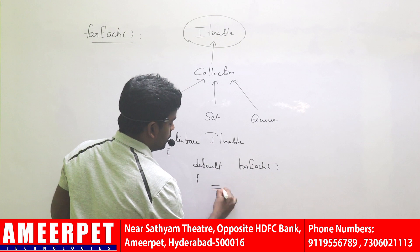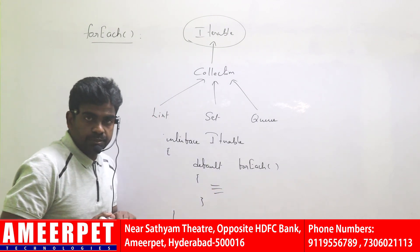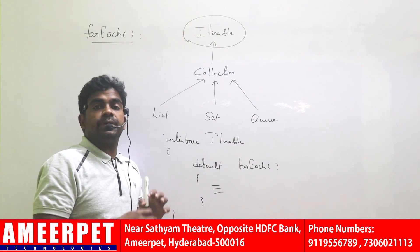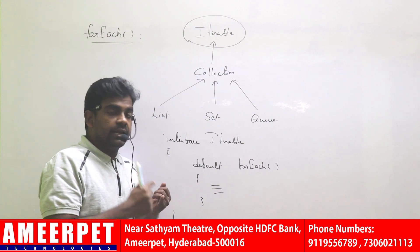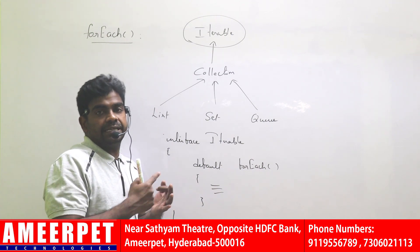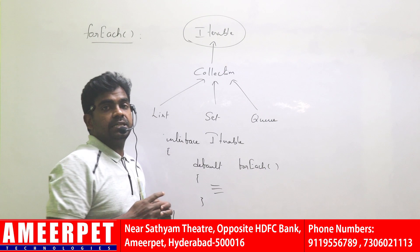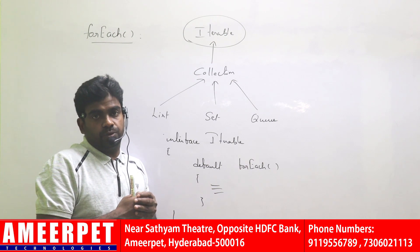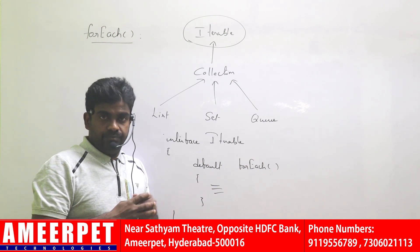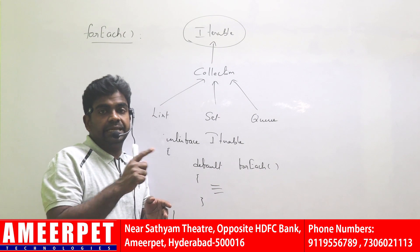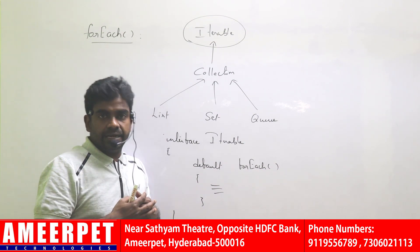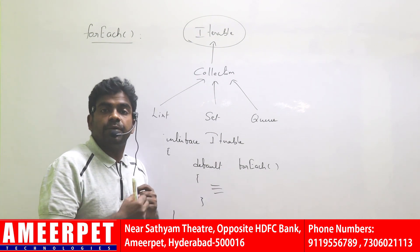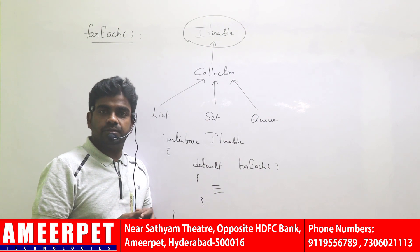The purpose of the forEach method is to easily process the information of any collection object — a List collection, a Set collection, or a queue collection. The forEach method is not only part of the Iterable interface; it also belongs to the Stream class in the Stream API, which was also introduced in JDK 8. How we use the forEach method in streaming will be covered in the coming videos. Hope you understood. Thank you.